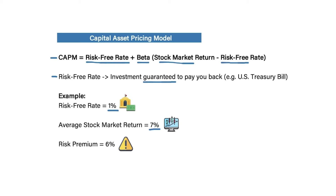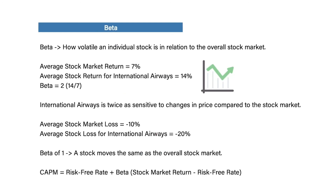What that means is we're choosing to either invest in something that is risky or risk-free. The reward that we get for taking on the risk is a 6% higher return. In other words, our risk premium is 6%. So now let's talk about beta.